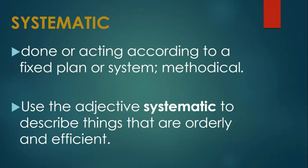Thus, systematic is defined as done or acting according to a fixed plan or system. Methodical. And use the adjective systematic to describe things that are orderly and efficient. So what are the different steps of science or the scientists used to make everything in order?